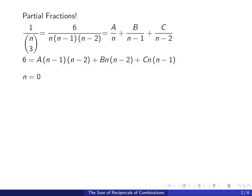So for example if you plug in n equals 0 the second and third term that have n, those disappear and we're going to end up with 6 equals a times negative 1 times negative 2 which means a is 3.